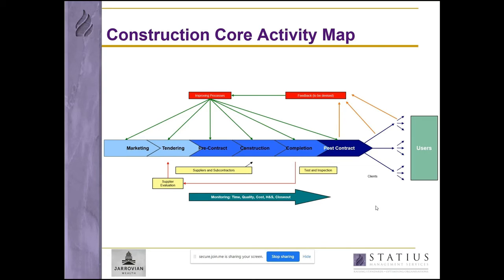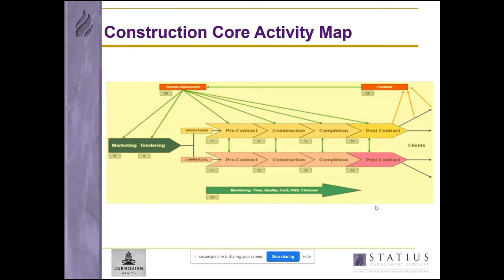Supporting these core processes are some critical support processes: the first yellow box is supplier and subcontractor evaluation; the long thin yellow box is managing suppliers and subcontractors; and the final yellow box relates to additional test and inspection activities. The green arrow is the ongoing monitoring of time, cost, health and safety, and close-out. As an example of things changing, a decision was made to split the processes after tendering activities in order to separate project management activities from the commercial and financial activities.